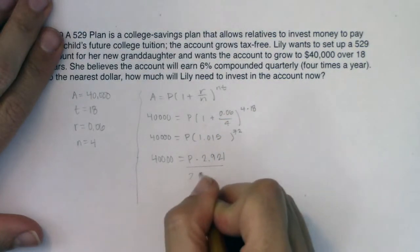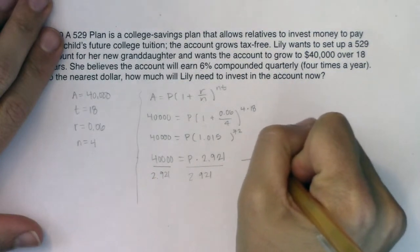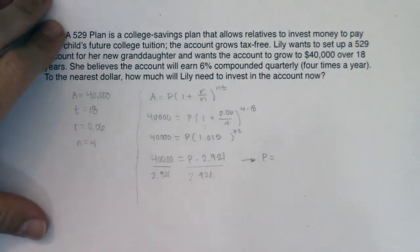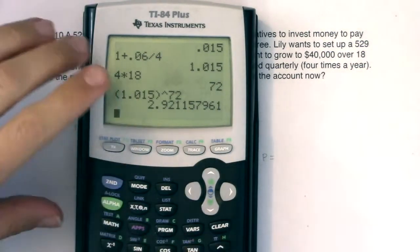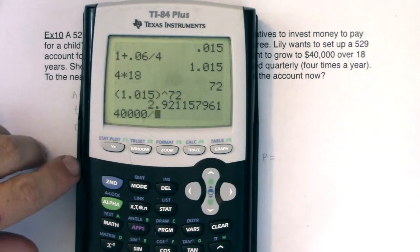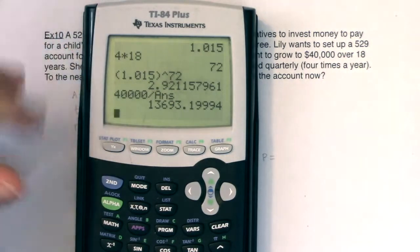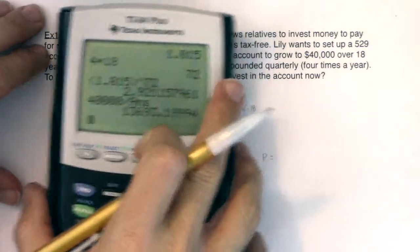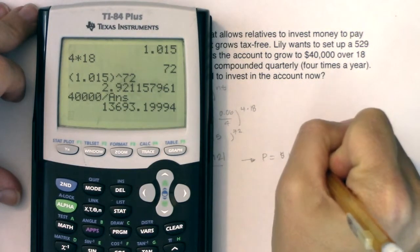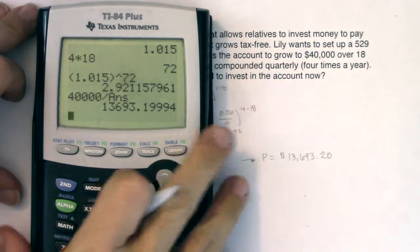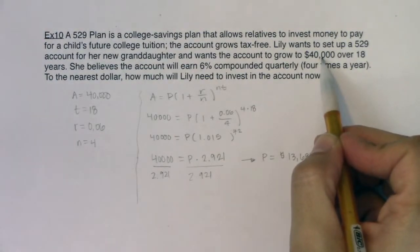If I want to solve for P, I would divide both sides by 2.921. Again, I'm not going to use the rounded 2.921 — I'm going to use the full decimal from my calculator. So I'm going to do 40,000 divided by that previous answer, and when I hit enter, I get about $13,693.20. So it looks like Lily needs $13,693.20 now so that her granddaughter can have $40,000 by the time she turns 18.